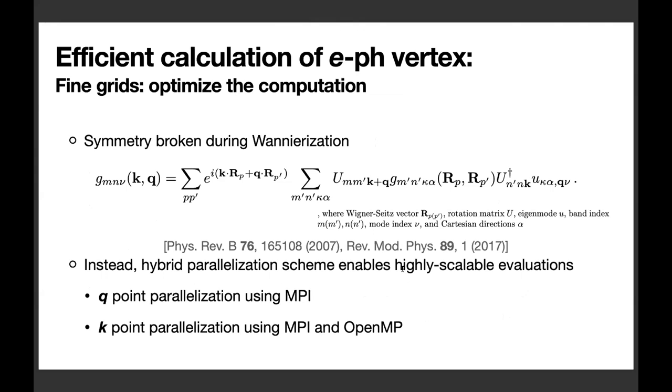Next is related to the optimization of computation in programming level. Currently, EPW uses crystal symmetry on dense grid. But, rigorously speaking, for the evaluation of electron-phonon vertex on dense grid, we cannot use the previous symmetry relation since symmetry is broken during Wannierization. So I explored another route to enable efficient computation of electron-phonon vertex on dense grid, and I changed the current parallelization scheme in the interpolation part.